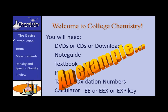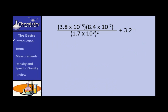Let's try a sample problem. If you already know how to use your calculator thoroughly, you might want to skip over this. Consider this problem: 3.8 times 10 to the 15th, times 8.4 times 10 to the negative 7th, that quantity divided by 1.7 times 10 to the 3rd, that quantity squared, plus 3.2. I'm going to show you how to input that into a typical algebraic calculator. If your calculator uses RPN — reverse Polish notation — you'll need to refer to your manual.